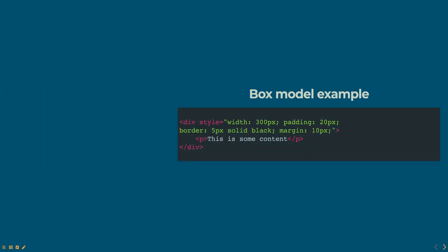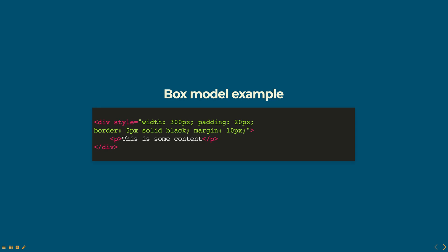Here is an example of the Box Model. In this example, the div element has a width of 300 pixels, a padding of 20 pixels, a border of 5 pixels and a margin of 10 pixels. The content of the div element is the text 'this is some content'.